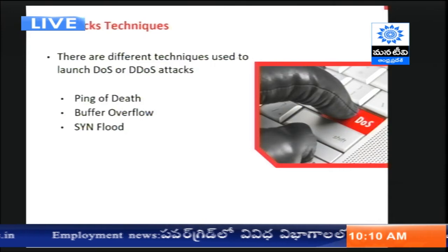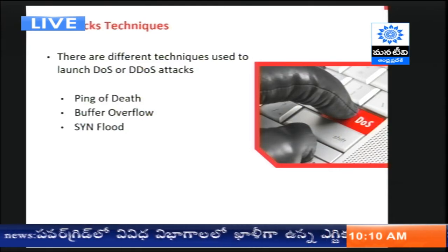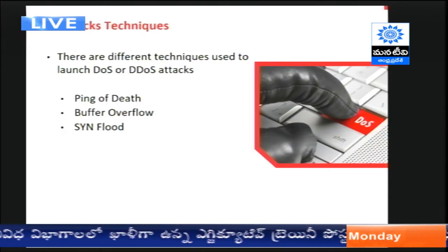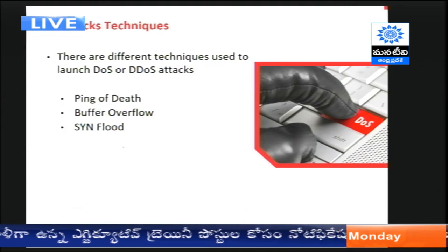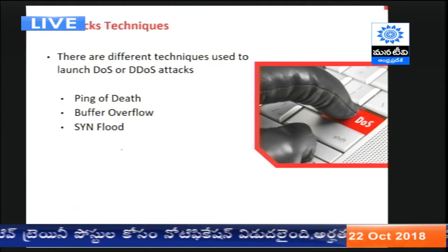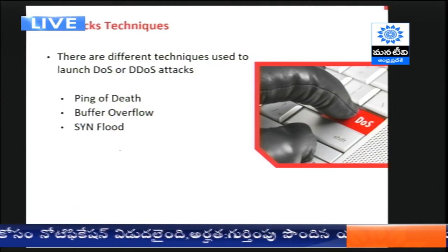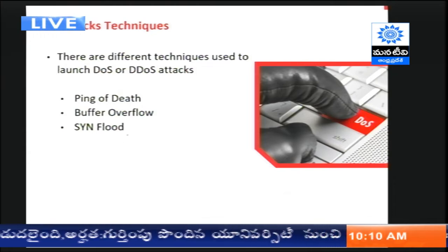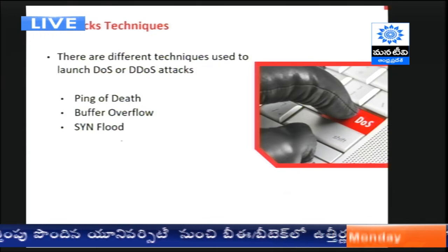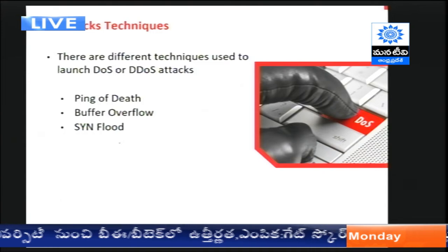Now let us see what different types of DDoS attacks can be performed. When we speak of DDoS attack techniques, there are three major techniques used by hackers: Ping of Death, Buffer Overflow, and SYN Flood attack. These are three different methods a hacker can use to launch a DOS attack on a system or server. Let us discuss them one by one, starting with Ping of Death.